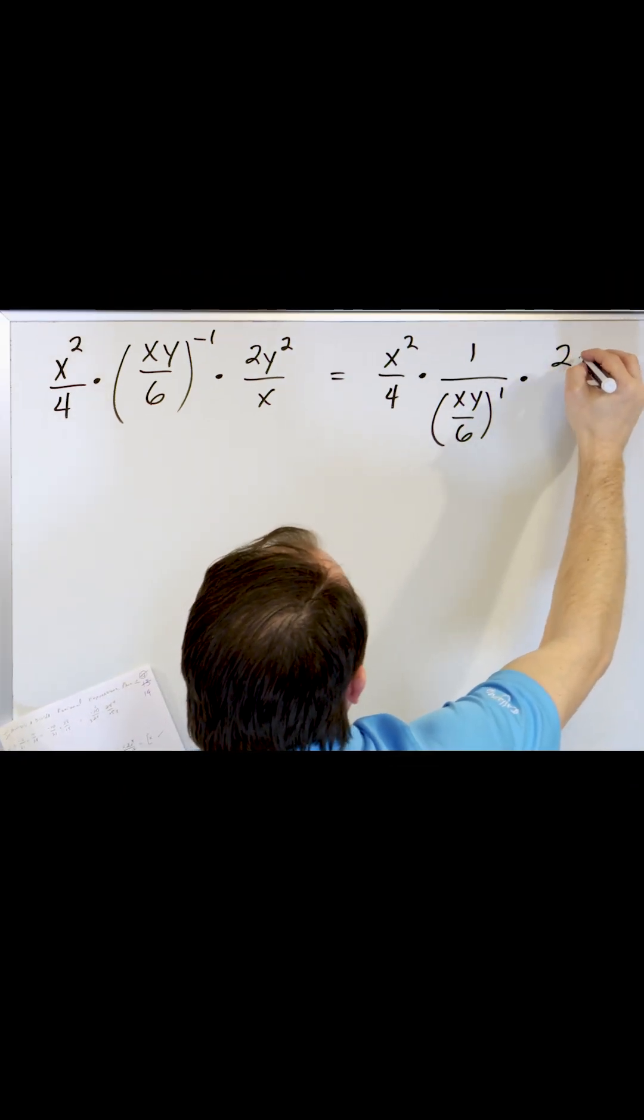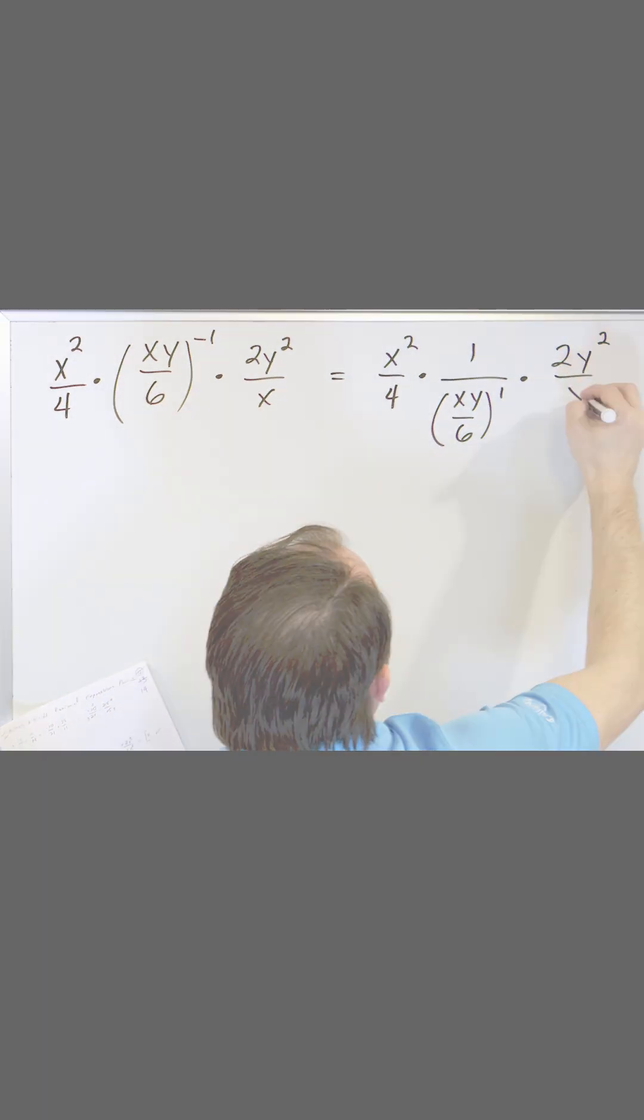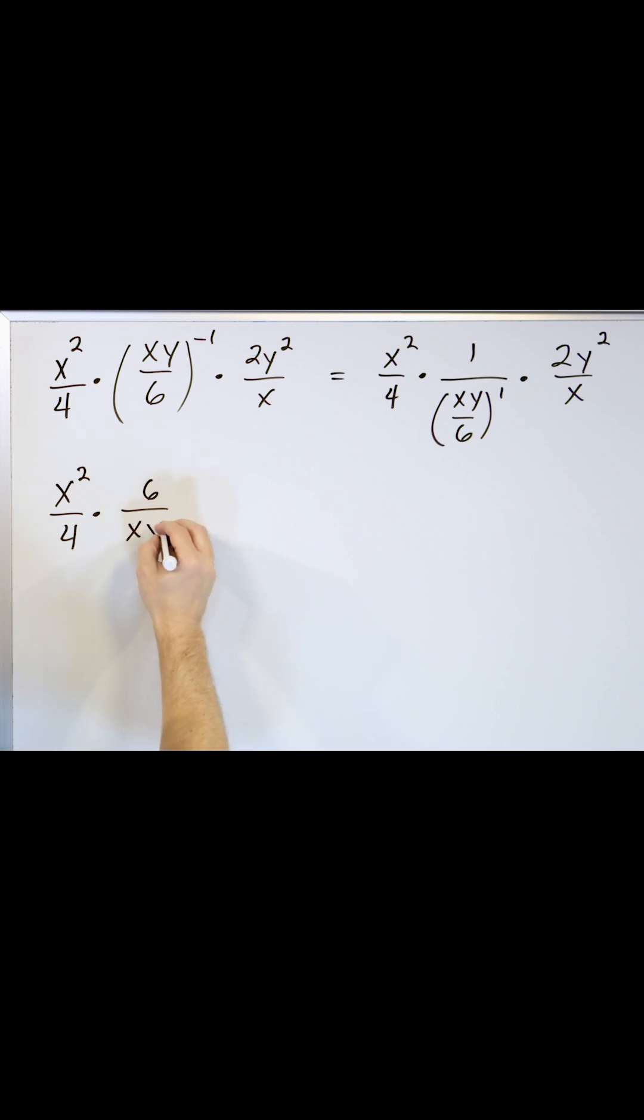And then we're not going to touch anything else. Two y squared over x, six over xy, two y squared over x. We have six times two is going to give you 12.